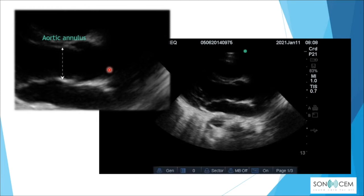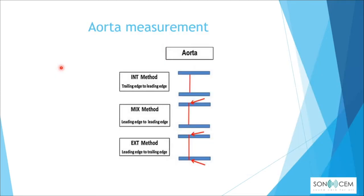At the aortic annulus, the measurement should be from inner wall to inner wall. In general, there are several methods for measuring the aorta: the mixed method (leading edge to leading edge), the external method (leading edge to trailing edge), and the internal method (trailing edge to leading edge, or inner edge to inner edge). For the abdominal aorta, the external method — outer wall to outer wall — is used.